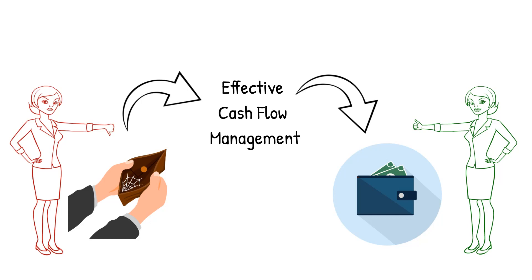You can of course calculate cash flow at different levels within the construction company — on an individual project basis, where the cash flow deals with the income and expense on a particular project, and an overall company cash flow, which deals with the difference between the company's total income and total expenses.